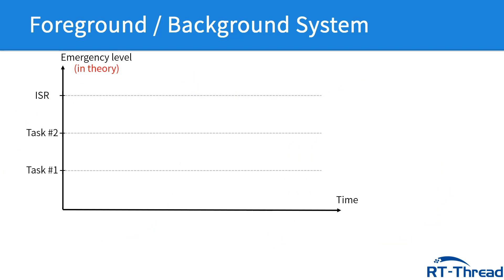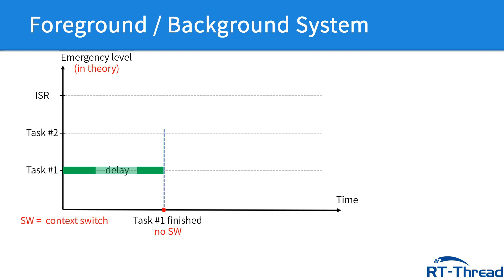More specifically, let's check out this graph and assume that the emergency level of task 1 is lower than that of task 2, and task 1 runs first. At this moment, task 1 needs to delay for a while. Following the foreground-background system method, task 2, whose emergency level is higher than that of task 1, still cannot run because the CPU must wait for the termination of task 1. Only after task 1 finishes can task 2 finally start.